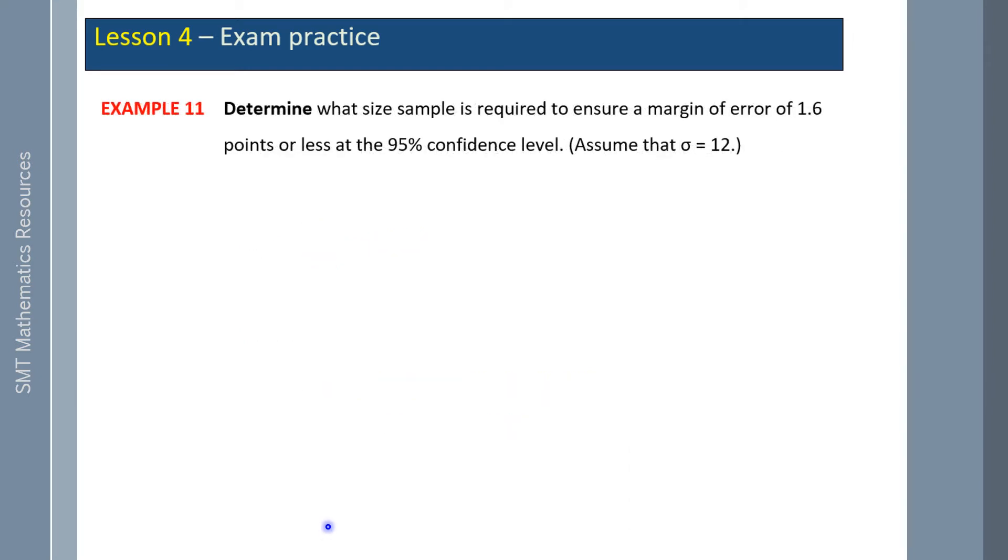Example 11: Determine what size sample is required to ensure a margin of error of 1.6 points or less at a 95 percent confidence level, assuming that sigma is 12. So our number is z times sigma over the error, squared.